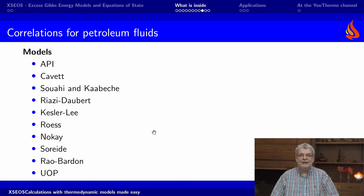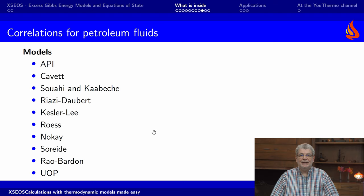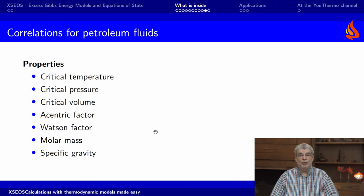XS-COS also contains several correlations for petroleum fractions. The properties include critical properties such as critical pressure, critical temperature, acentric factor, Watson factor, specific gravity, and molar mass.